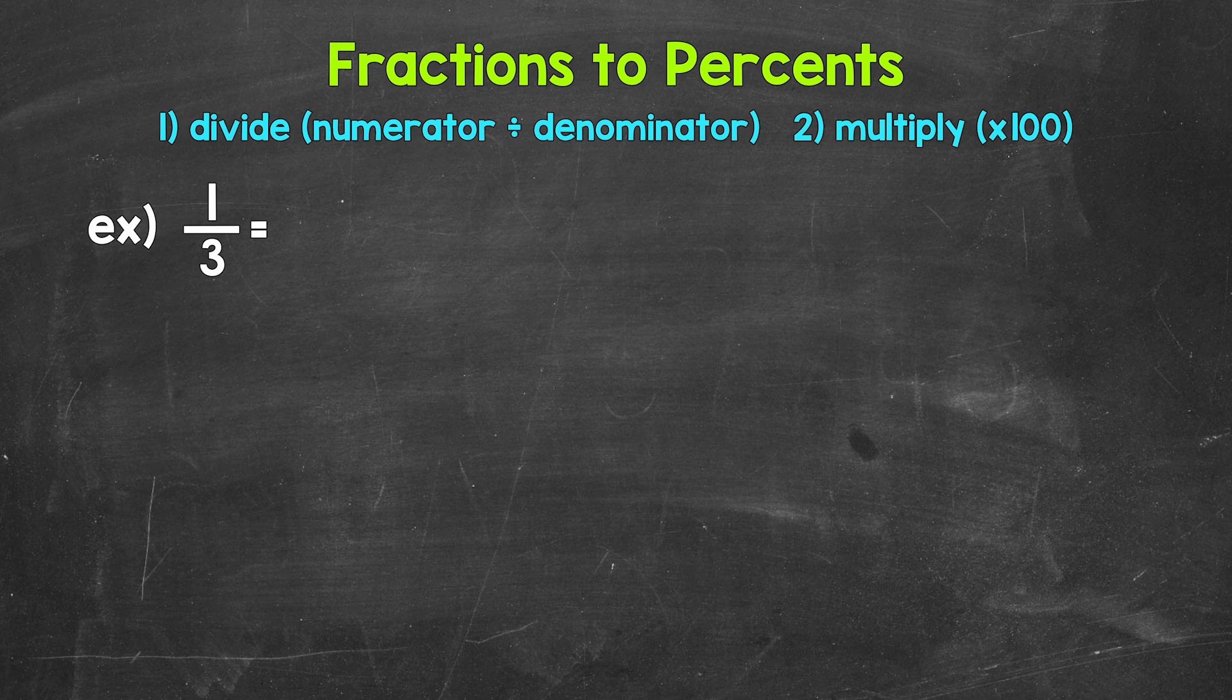Now when we convert a fraction to a percent, we can start by dividing the numerator, the top number of the fraction, by the denominator, the bottom number of the fraction.